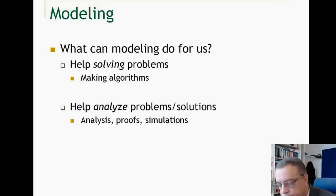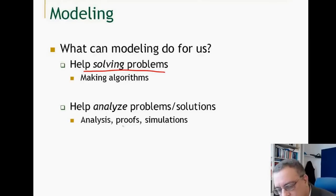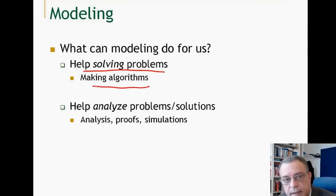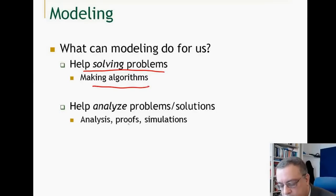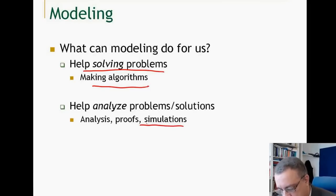What can modeling do for us? It can help us solve problems by understanding the underlying model. We can develop algorithms within that model to solve the problem. It can help us analyze problems and solutions, analyze the algorithms, help us make proofs about the system, and it can help us for simulating a system and for testing a system running certain algorithms.